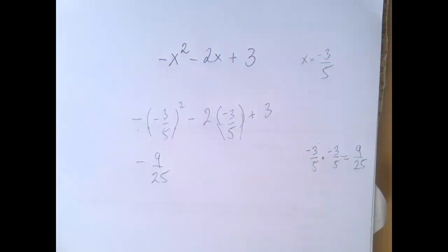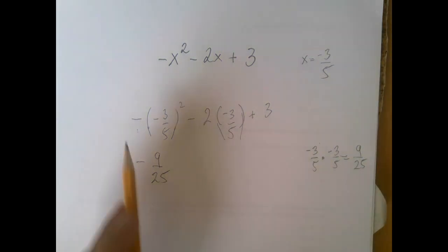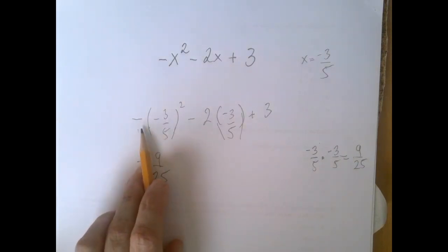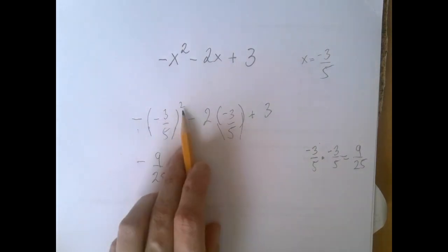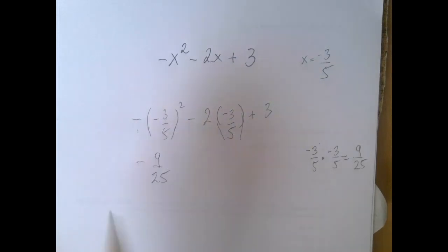So negative 9 over 25. You might be tempted to cancel out these two minus signs, but this one represents two of them because of the squaring. So really there are three of them, which is why we land on a negative value.